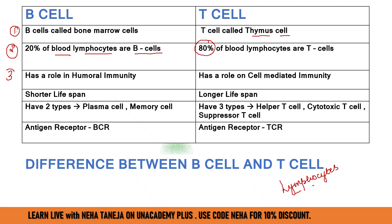In B-cells, if we talk about immunity or prathirodak-shamta, B-cells play a very important role in humoral immunity. We talk about antibodies — IgG, IgA, IgM, IgD, IgE and some sub-types — and we see the role of humoral immunity there. But if there is an infection inside the cell, and antibodies cannot reach, then we talk about cell-mediated immunity, which is the role of T-cells.